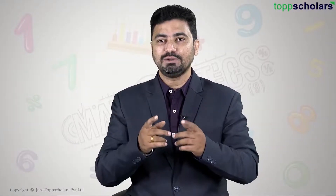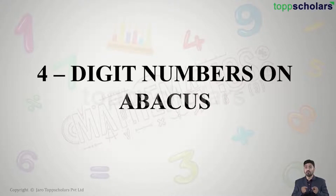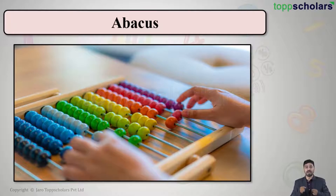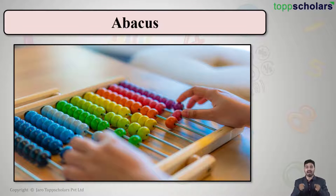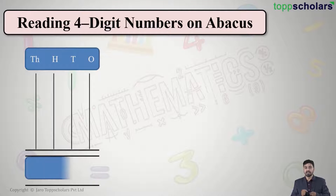Hello students, welcome to Top Scholars! Today we are going to learn about four-digit numbers through abacus. An abacus has beads arranged in columns so that we can count digits in a number. Basically, an abacus is an instrument used for counting digits in a number.